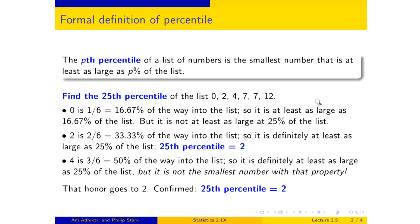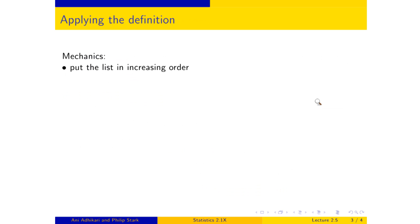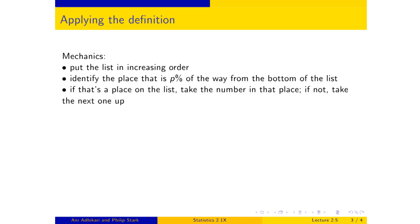So what I'd like to do now is go over the mechanics of how to use the definition. And it goes without saying that you will put the list in increasing order. And then you will identify the place in the list that is p percent of the way from the bottom of the list. And if you're lucky, that might be a place that is exactly on the list, in which case you take that number. And if not, what do you do then? If not, you take the next one up.